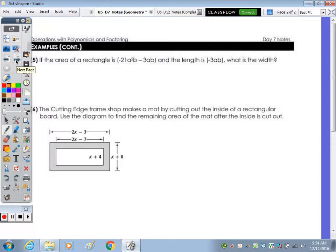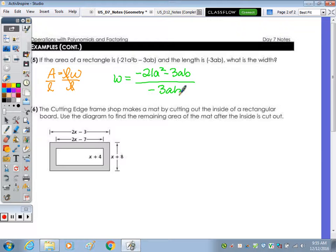Number 5. If the area of a rectangle is given and the length is given, what is the width? If we know the area is length times width, and we know the length, so we know A and L and we need W, if we solve for W back to a literal equation, W equals A over L. So if I take the area, the width equals negative 21A squared B minus 3AB divided by negative 3AB. Negative 21 divided by negative 3 is positive 7. A squared divided by A, subtract, we get A. The B's cancel out. Then minus, divide these two, negative over negative is positive, and 3AB divided by 3AB, everything cancels. Anything divided by itself is 1. So the width is 7AB minus 1.